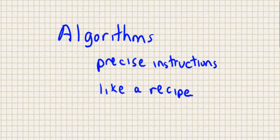This lesson is about algorithms. Algorithms are precise instructions telling the computer what to do, kind of like a one, two, three recipe — but more precise than a recipe.